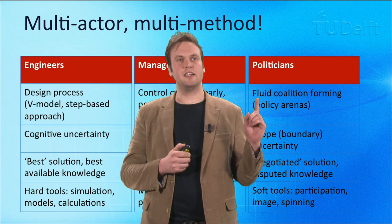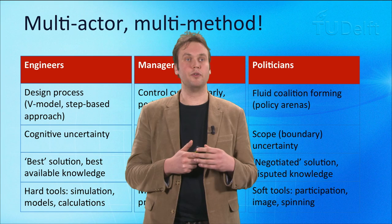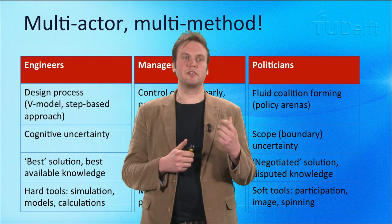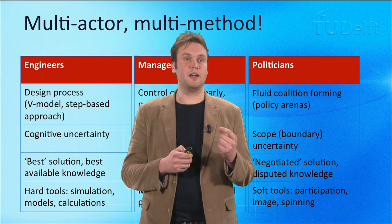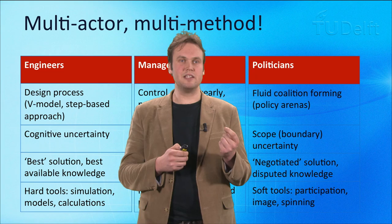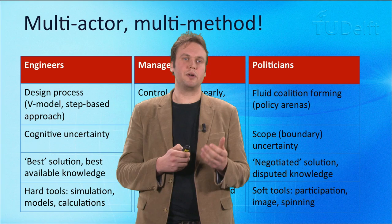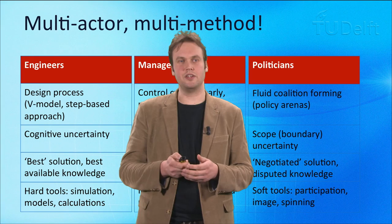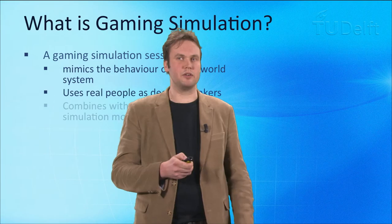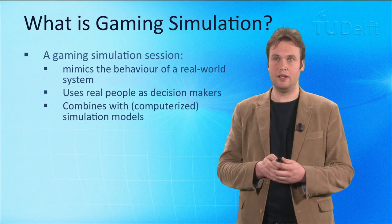In the last column, you have politicians. Politicians have coalitions. They need to work together in what we call policy arenas, where they try to converge to a particular solution. What is very uncertain there is the scope — it might always be that somebody comes along with additional input into the process. This ends up in what we often call negotiated solutions. Knowledge can be disputed, so people can disagree whether something is actually true, which for engineers is absolutely unreasonable. In this domain, soft tools are used: participation, image, and spinning. If we have all these types of actors together, we need to find solutions in which they can work together on formulating new states of a particular system. And that's where gaming simulation comes in.